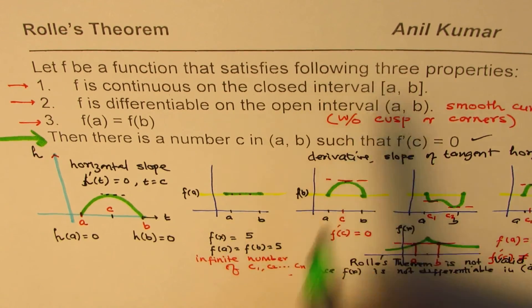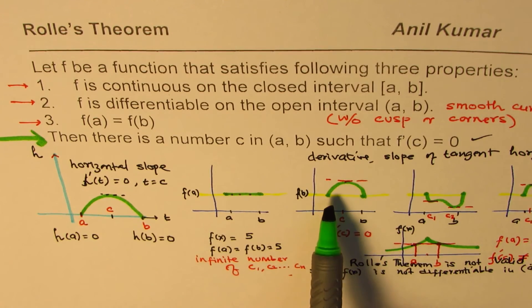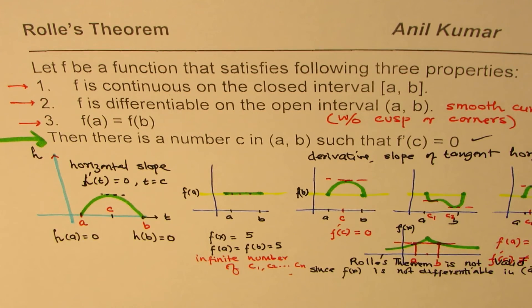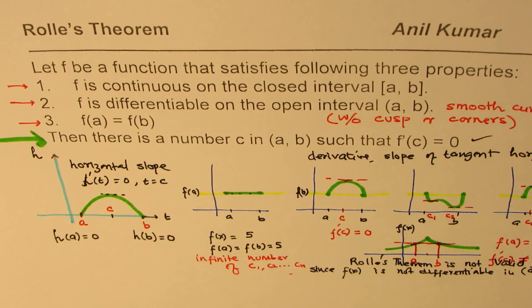So whenever you sketch, you have to sketch without lifting your pen, ensuring a continuous and smooth curve. Then there will be a point c in the open interval (a, b) where f'(c) = 0. I hope the concept is clear. We will take a few more examples to illustrate. I'm Anil Kumar — please share and subscribe. Thank you and all the best.